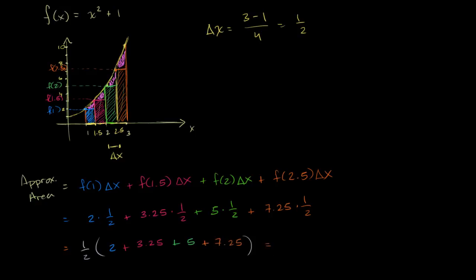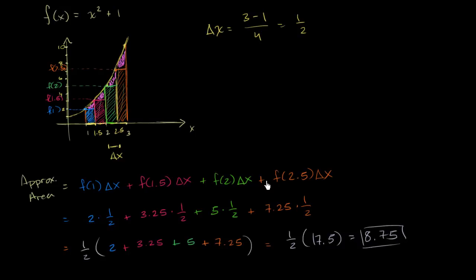So this equals one half times — let's see: 2 plus 5 is 7, 3 plus 7 is 10, and then 0.25 plus 0.25 gives 0.5, so 10.5 plus 7 is 17.5. So one half times 17.5, which equals 8.75. This gives us our approximation. And clearly, as drawn, for the function we're using it's going to be an underestimate, because we've given up all of that area. It's an underestimate, but it is an approximation of the area under the curve.